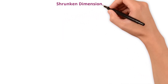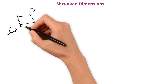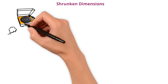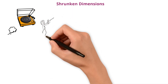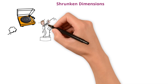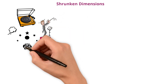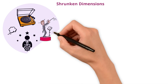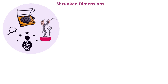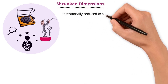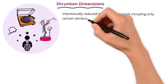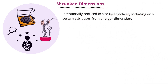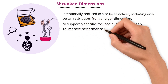Shrunken dimensions. Consider a greatest hits music album from a well-known artist. This album does not include every song the artist has ever produced, but rather a selection of the most popular or significant tracks that represent their work over the years — a smaller, more focused collection that still provides a comprehensive impression of the artist's music. Similarly, a shrunken dimension is a dimension that has been intentionally reduced in size by selectively including only certain attributes from a larger dimension. This is often done to support a specific focused business process or to improve performance in a particular context.